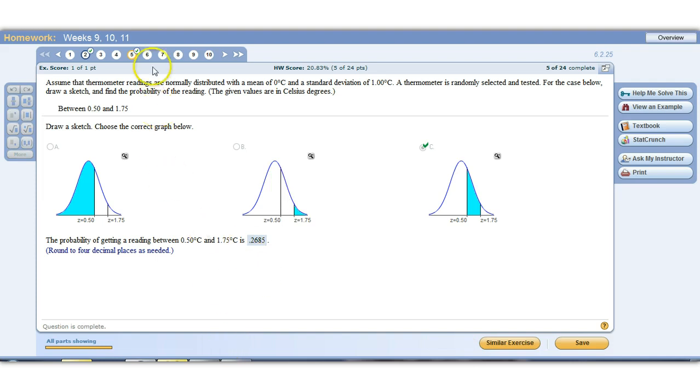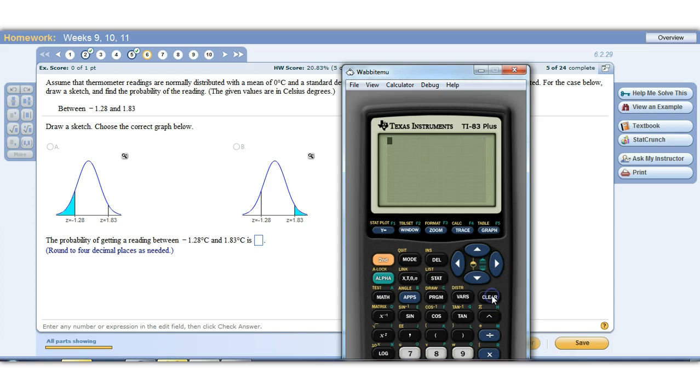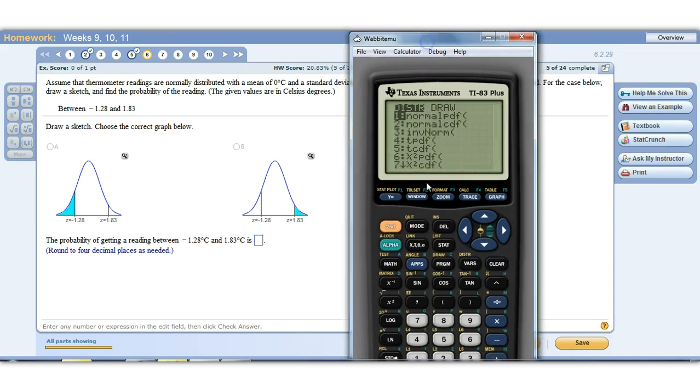All right. And then another one that's similar to this is six. Except in six, it wants between a negative z-score and then this positive z-score. So that's, again, this one. All right. Check answer. Good. And then the probability we're between those two numbers. Same distribution. It's just different values this time.